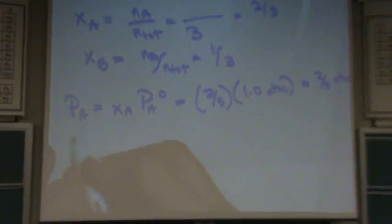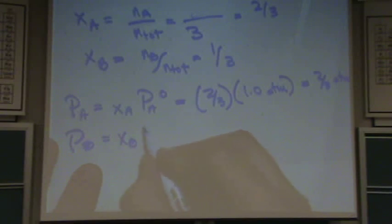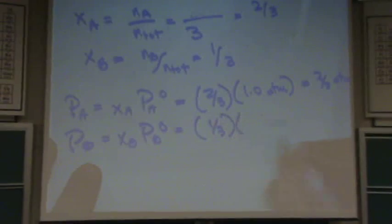For PA naught, or for PA, for PB you do the same thing. XB times PB naught. XB is 1 third, and PB naught, I just give it to you, is 2 atmospheres. That would be totally ridiculous. 2 thirds atmospheres, too big of a number. That's okay.